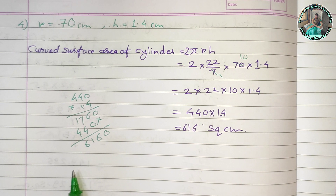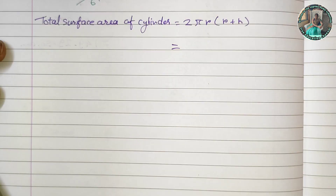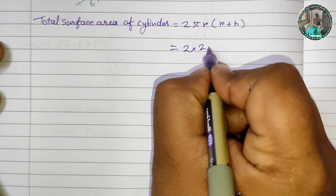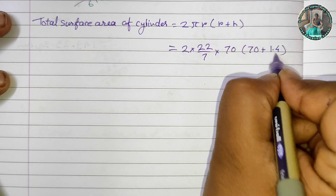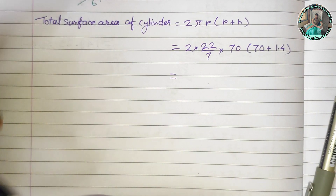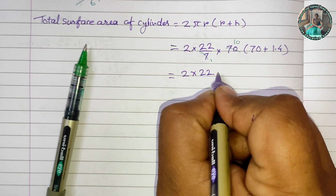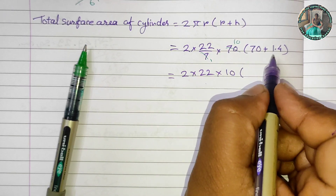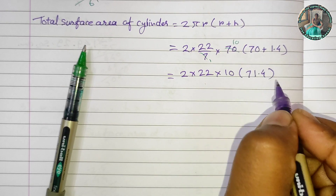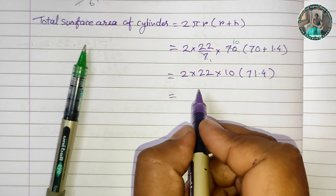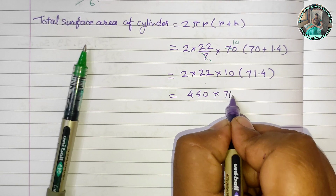The curved surface area is 616 square centimeters. Now we find the total surface area of the cylinder: 2 × (22/7) × 70 × (70 + 1.4). We calculate 70 + 1.4 = 71.4, and 2 × 22 = 44, then 44 × 10 = 440.